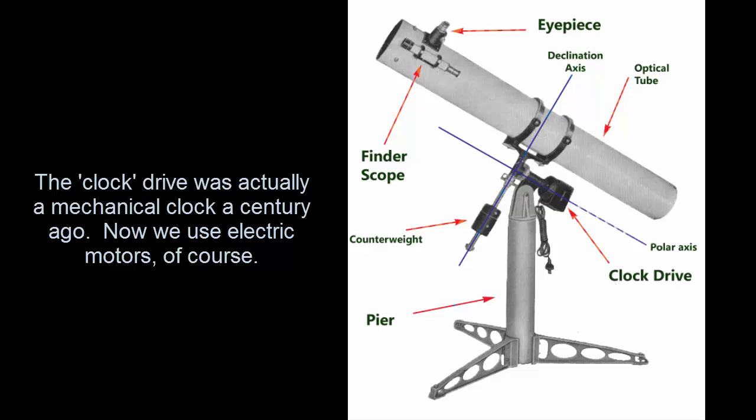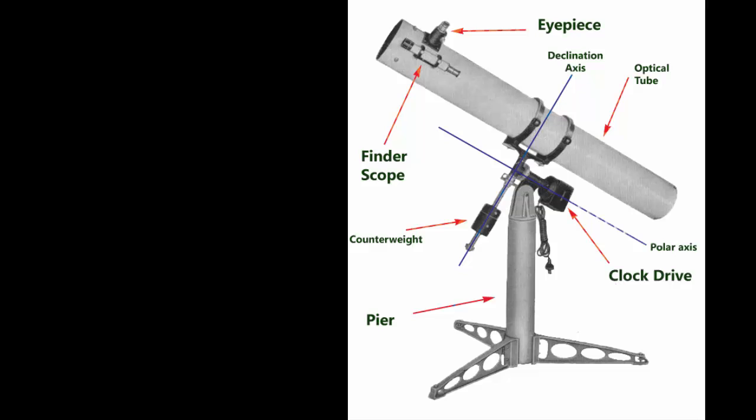The other axis at right angles to that is the declination axis. And you'll notice that the telescope is on one side of the polar axis, and the counterweight is necessary on the other side. So the counterweight is approximately the same weight as the telescope itself. That's how a German equatorial mount works.